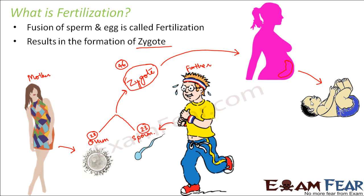If you look at a newborn baby, you see that it has got all the basic features — well-developed eyes, ears, nose, fingers, legs, hair. Everything is there in the baby, because that entire development has taken place inside the uterus of the mother. That's how it happens post-fertilization.